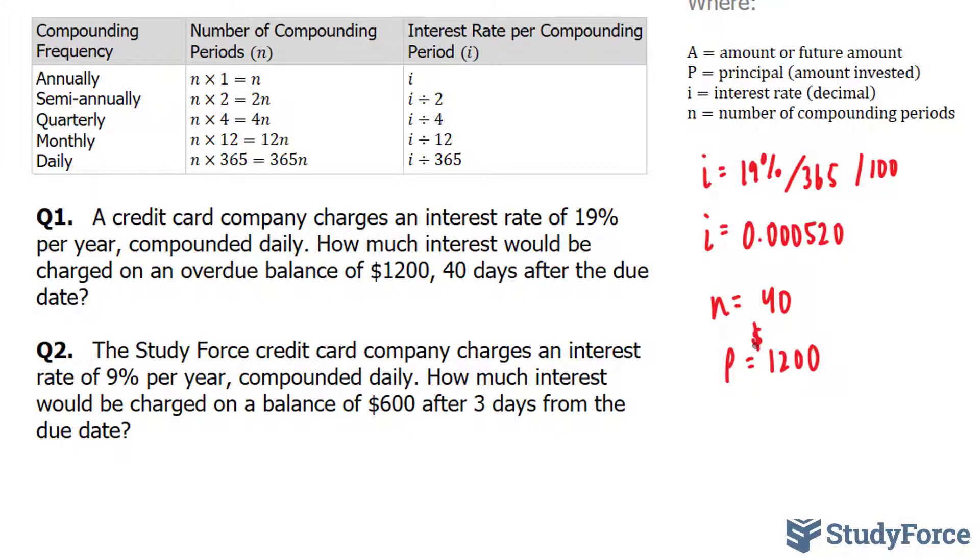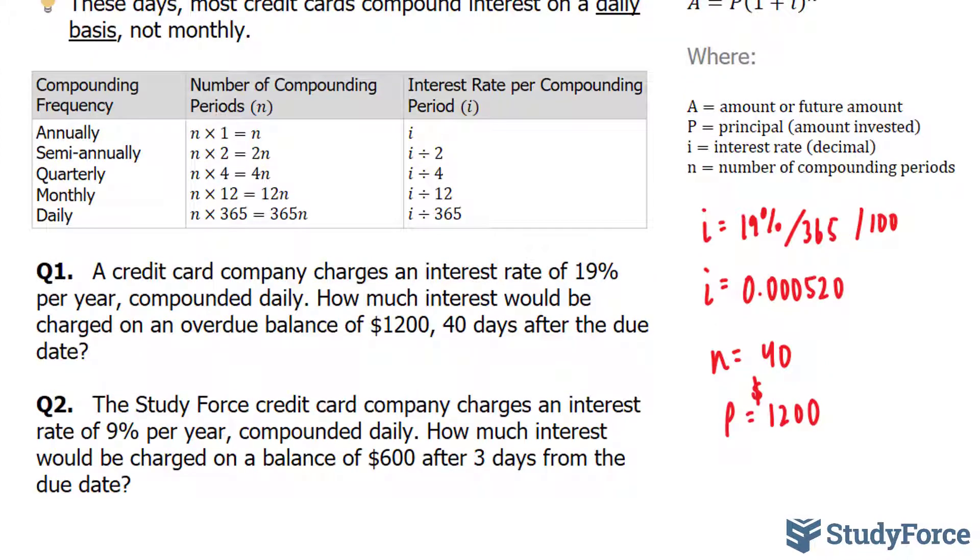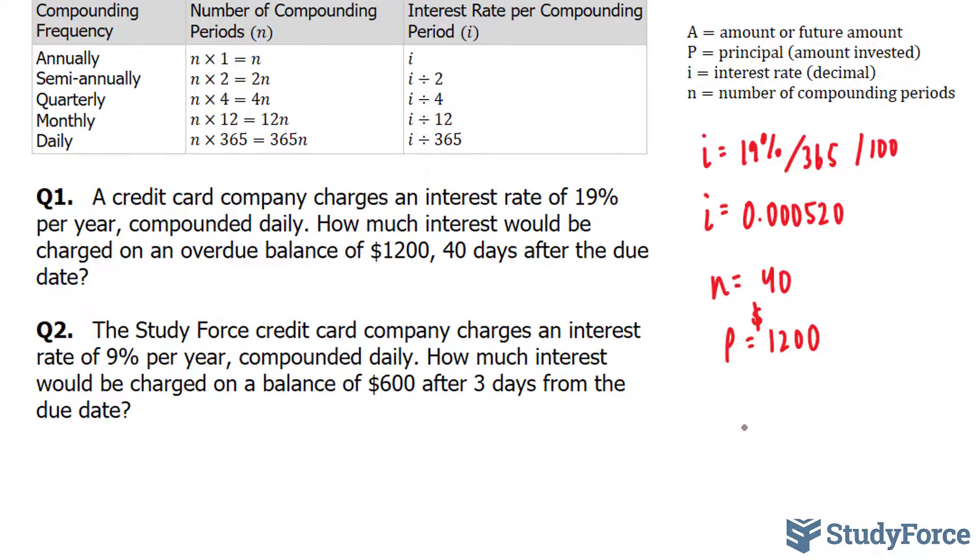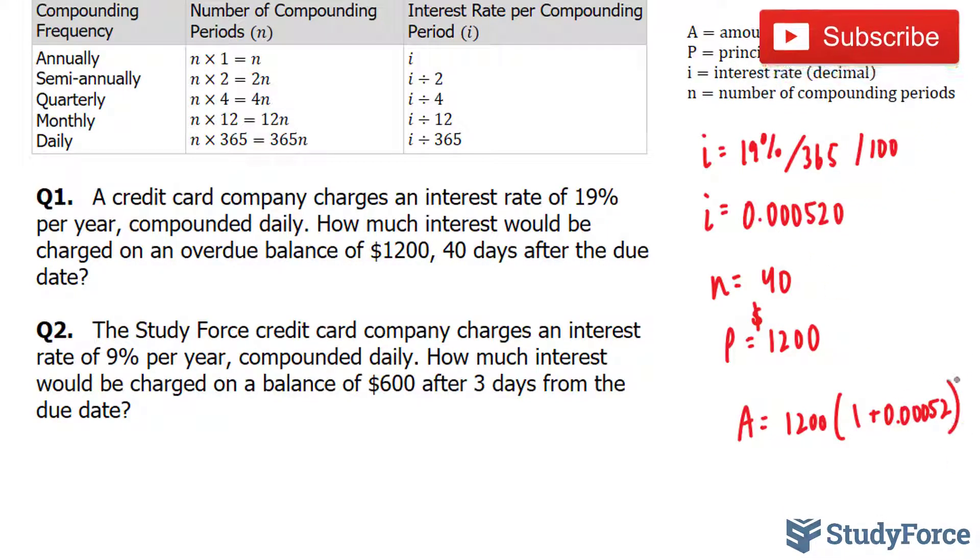So now we have all the information we need to calculate the amount, the amount that you owe. So A is equal to 1,200 times 1 plus this small number 0.00052 to the power of 40.